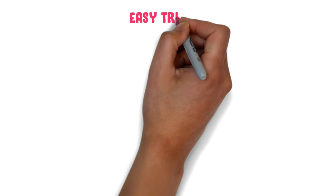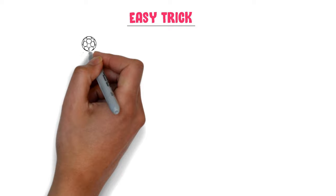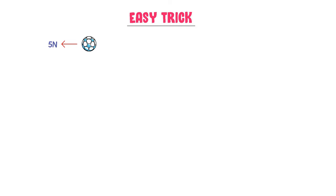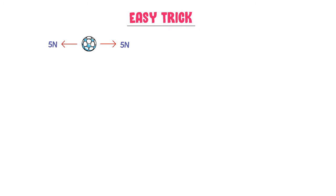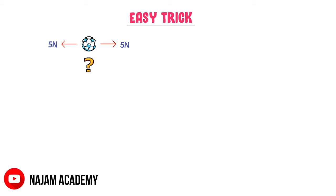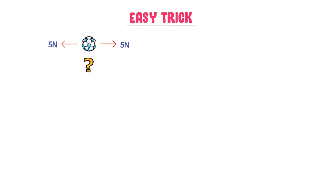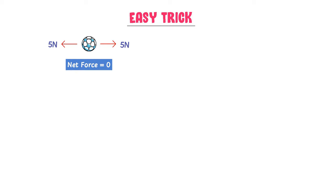Now let me teach you my personal and easy trick which you will not find in any book or any video. For example, consider this ball. Let a 5N force act on this ball in one direction and a 5N force act on it in the opposite direction. Where does the ball go? The answer is simple — the net force on this ball is 0.